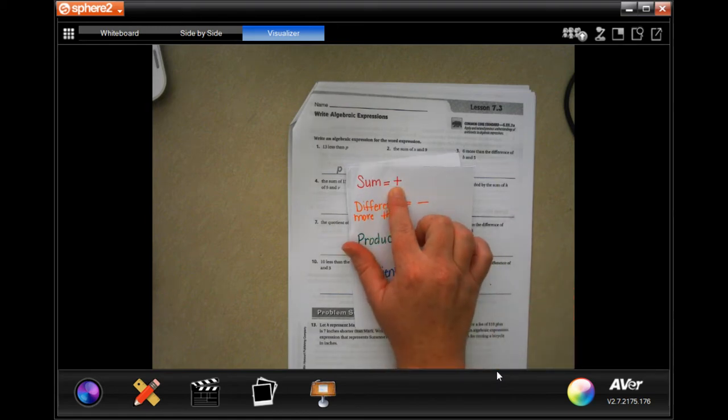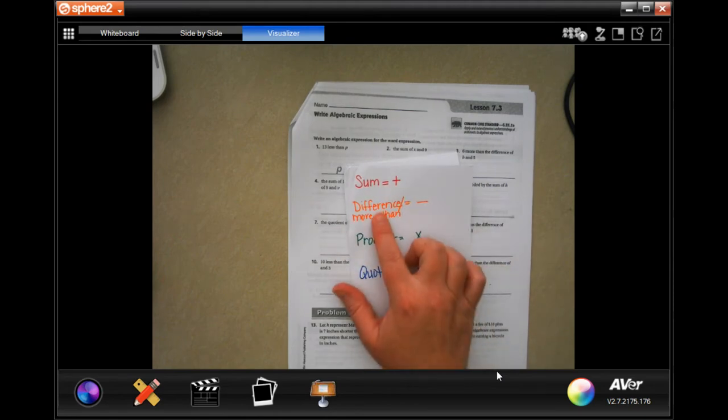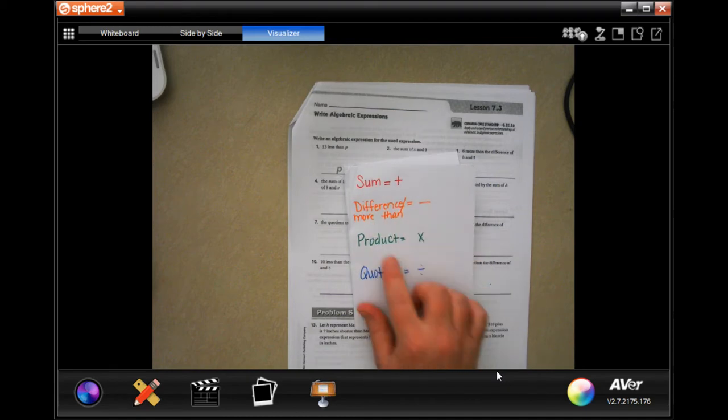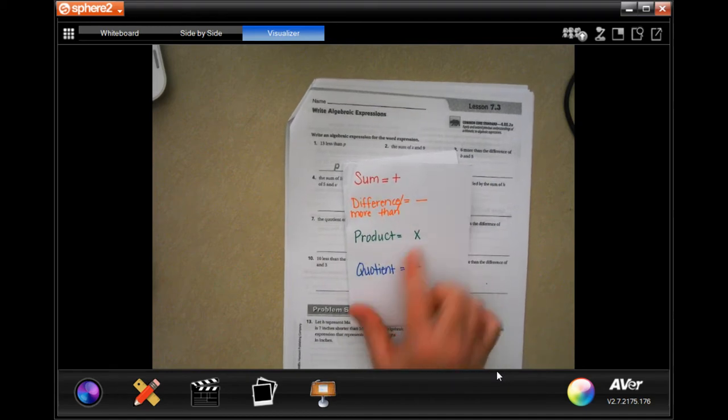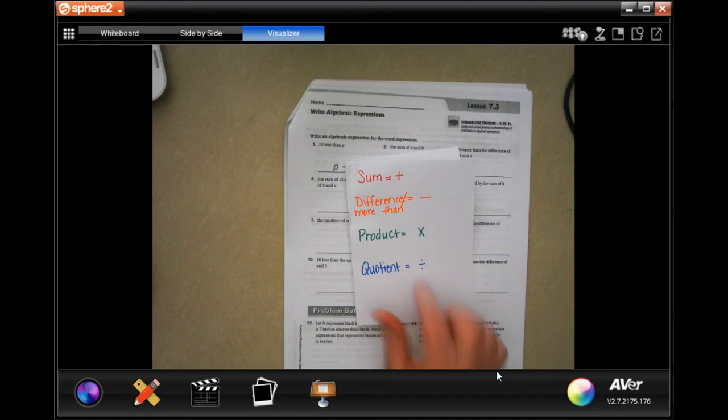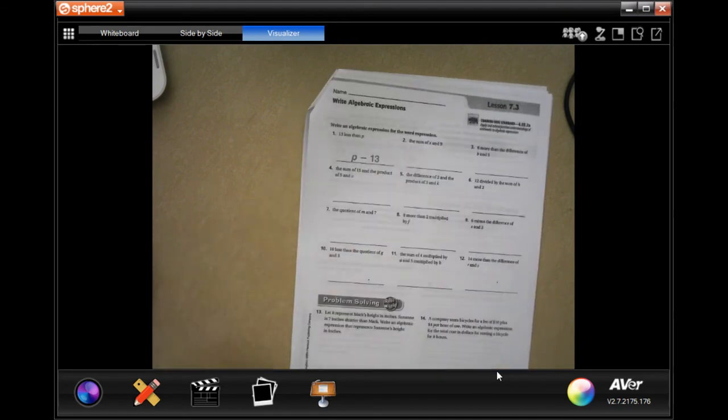Something has sum, it's talking about addition. When it says the difference or how much more than, that's subtraction, you're finding the difference. When it says product, you're multiplying. And when it says quotient, you're dividing. So write that down top of your page, do whatever you need to do.